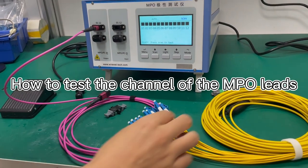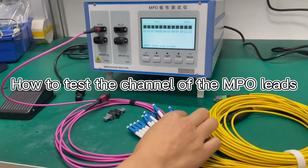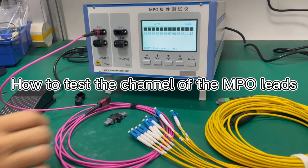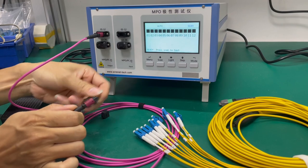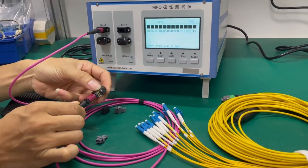Now we will show you how to use the tester to test the channels for 12 or 24 fibers. First, we use an MPO adapter to connect the MPO touchpad to the testing cables.